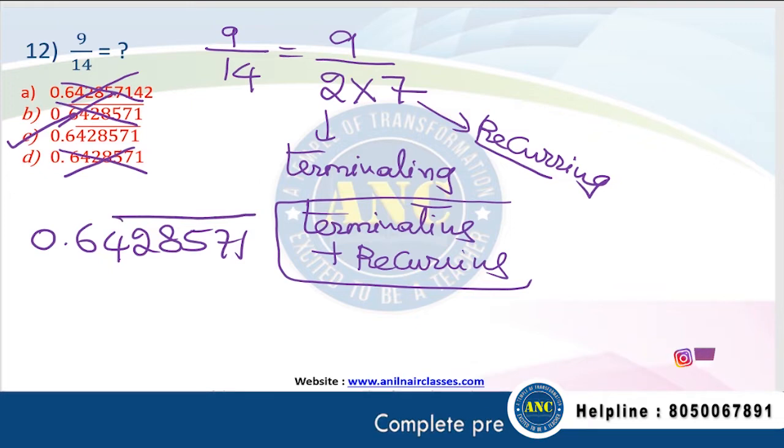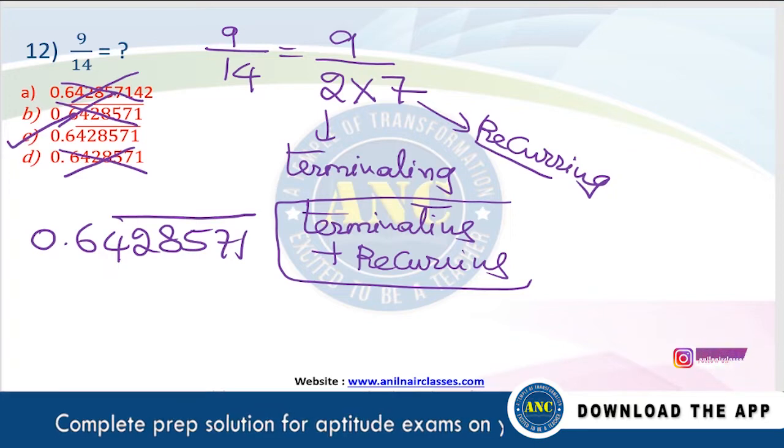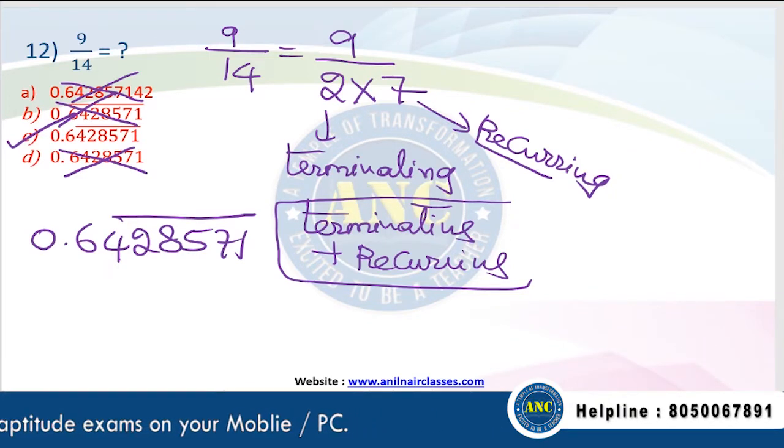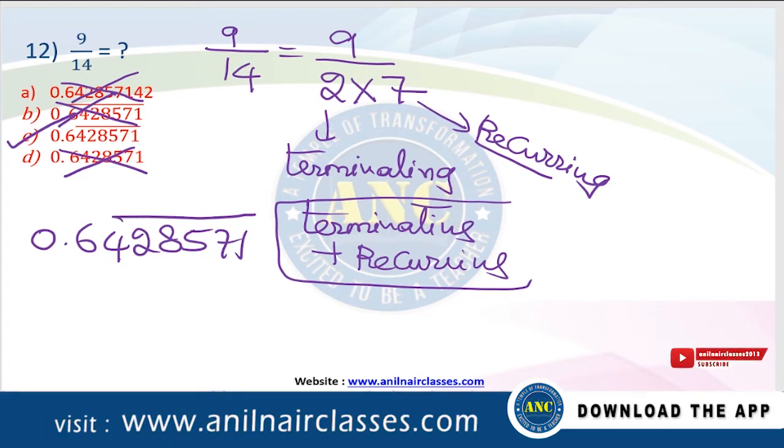9 by 2 into 7. If the denominator is a power of 2 and 5, I will get a terminating. If the denominator is anything other than power of 2 and 5, I will get a recurring. So answer should be a combination of terminating and recurring. Few digits should be terminating. Few digits should be recurring.